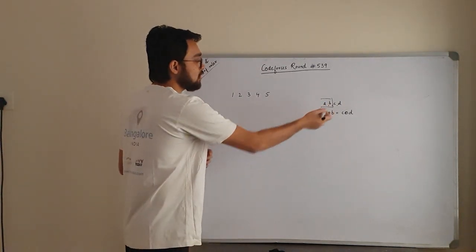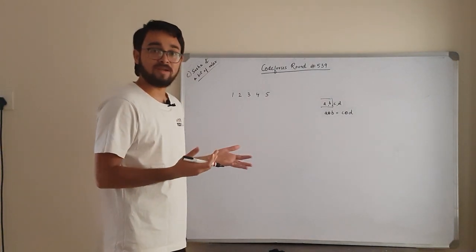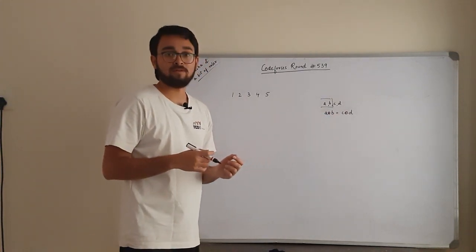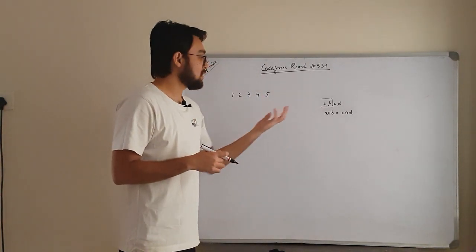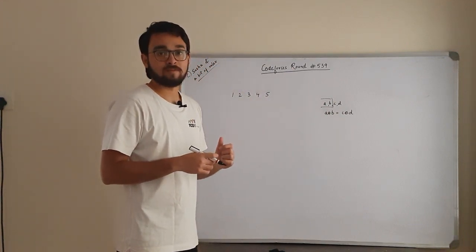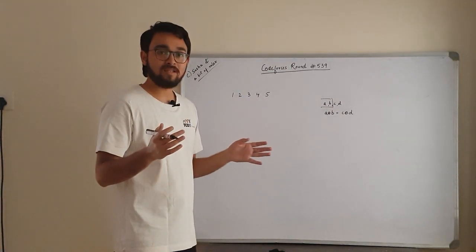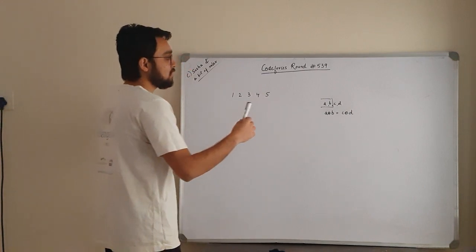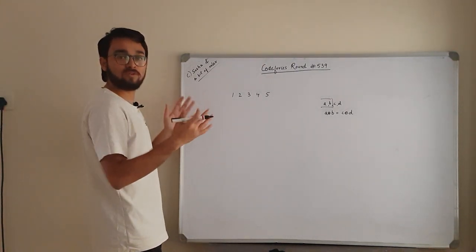If we look into this, we need to find segments where the first half XOR sum equals the second half. If the number of elements is odd — say 5 elements instead of 4 — then you can't do this, because you cannot divide an odd-length segment into two equal halves. So your segments will always be of even length.